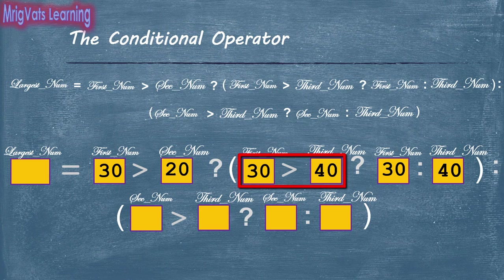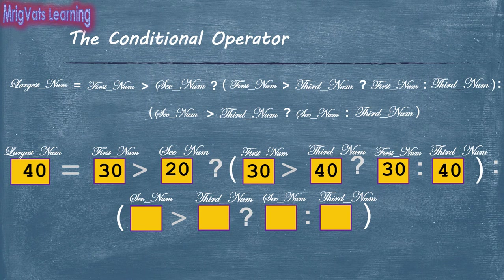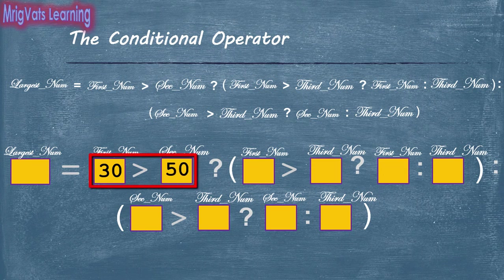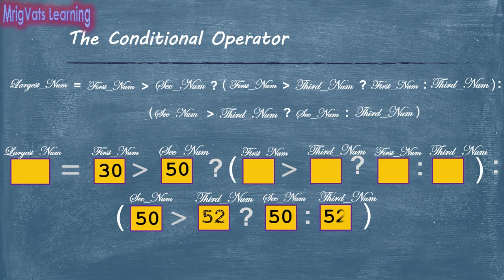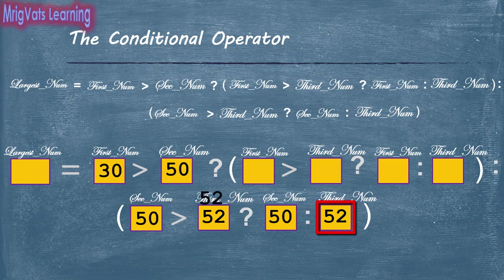However, if the first number is not greater than the second number, then you compare the second number with the third number, since the second number is already greater than the first. If the first number is less than the second number, you compare the second number with the third number. If it is greater, the value of the second number variable is assigned to largest number. If the second number is smaller than the third, the value of the third number variable is assigned, because the third number is greater than the second, which in turn is already greater than the first.